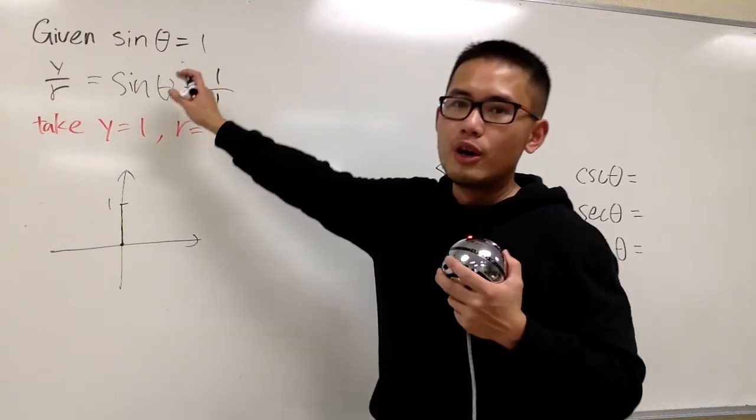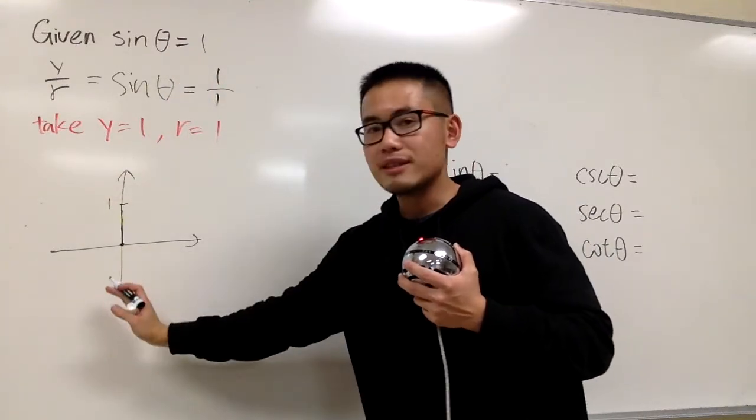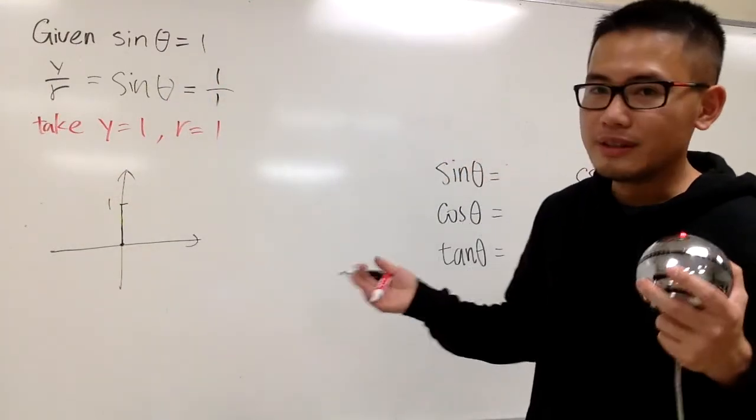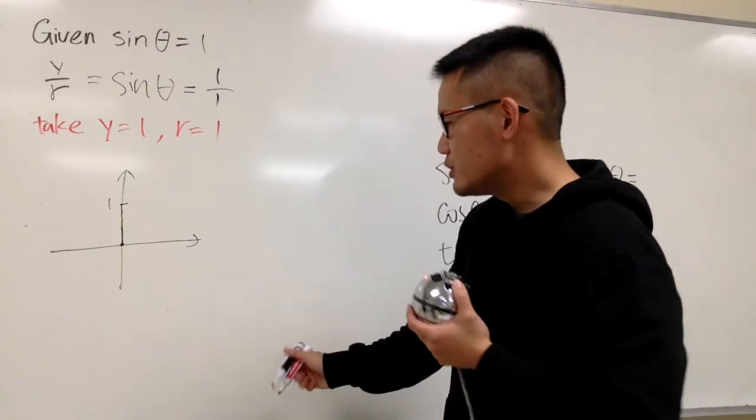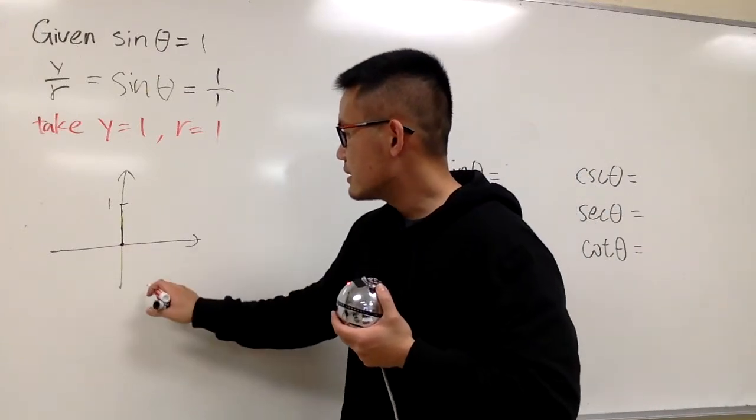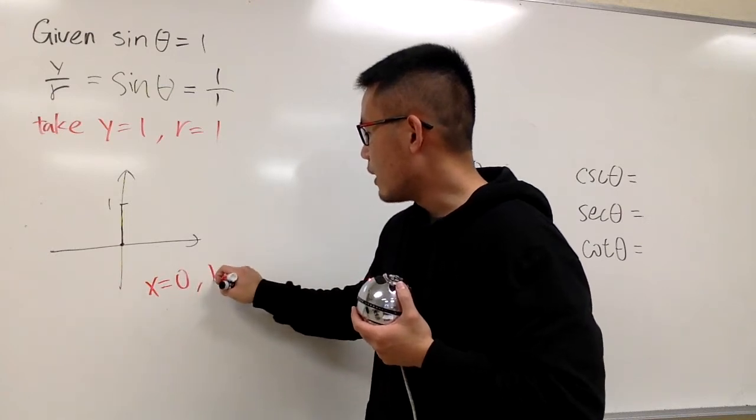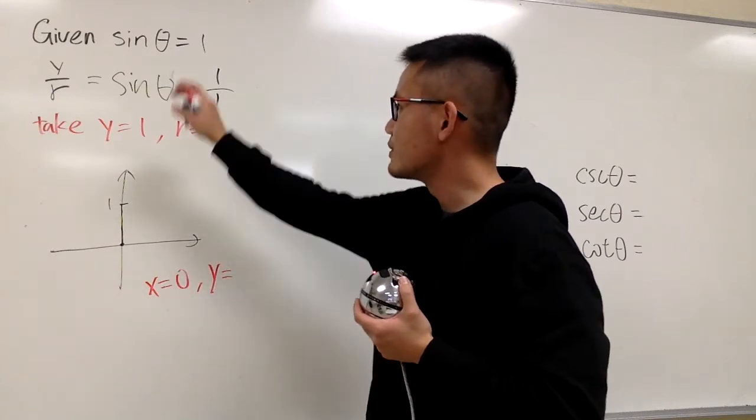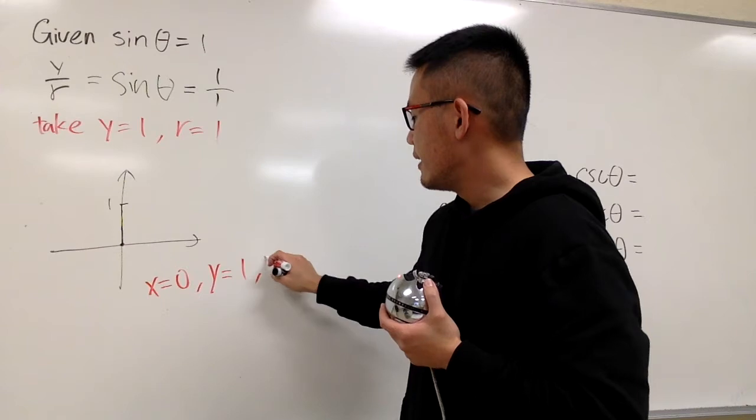In fact, this data right here is on the y-axis, so this x value will be 0. Let me just indicate this for you guys real quick. x is actually 0, and y is 1, and r is 1.